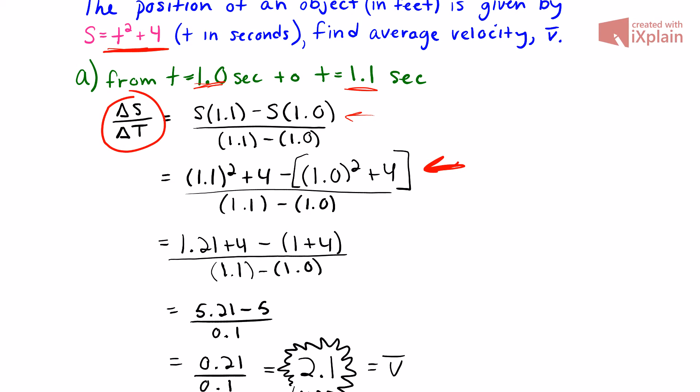Now when we come down a little bit, I worked that out by squaring those two numbers. We get 1.21 + 4, and that's subtracted by 1 + 4. This is still all over our change in time, which is 1.1 - 1.0.